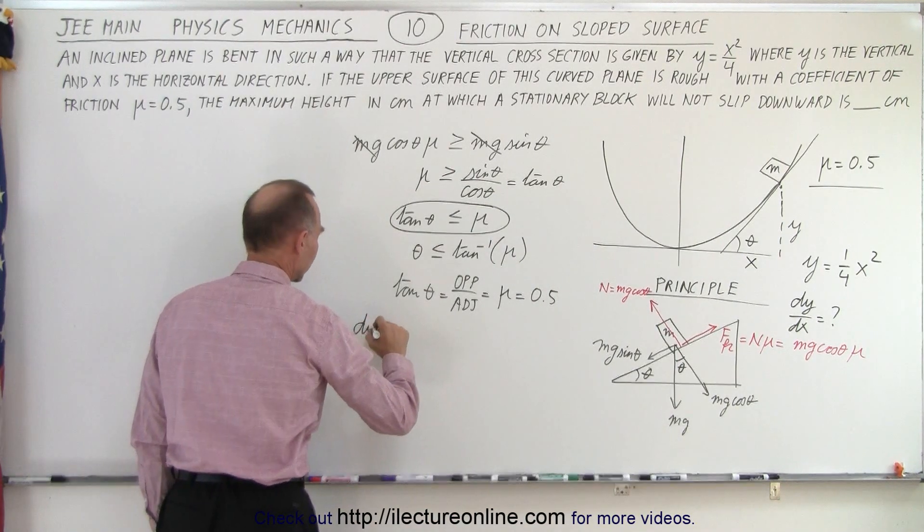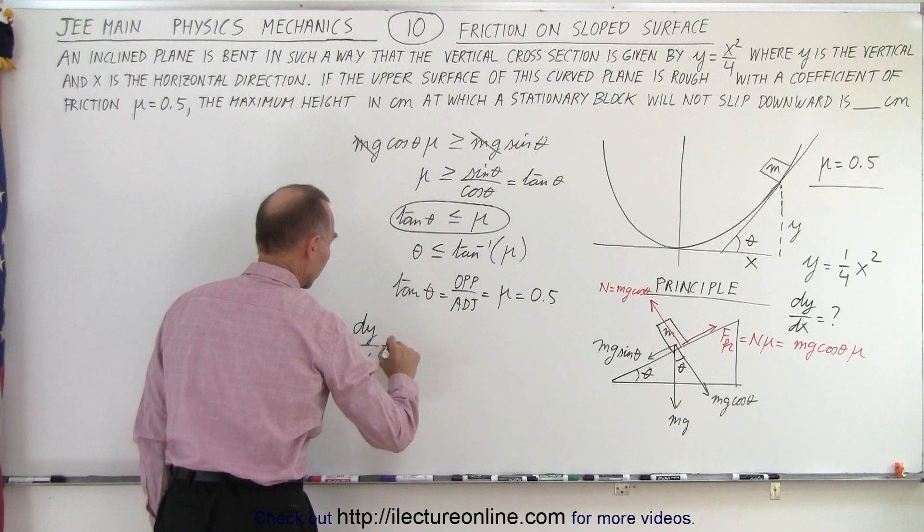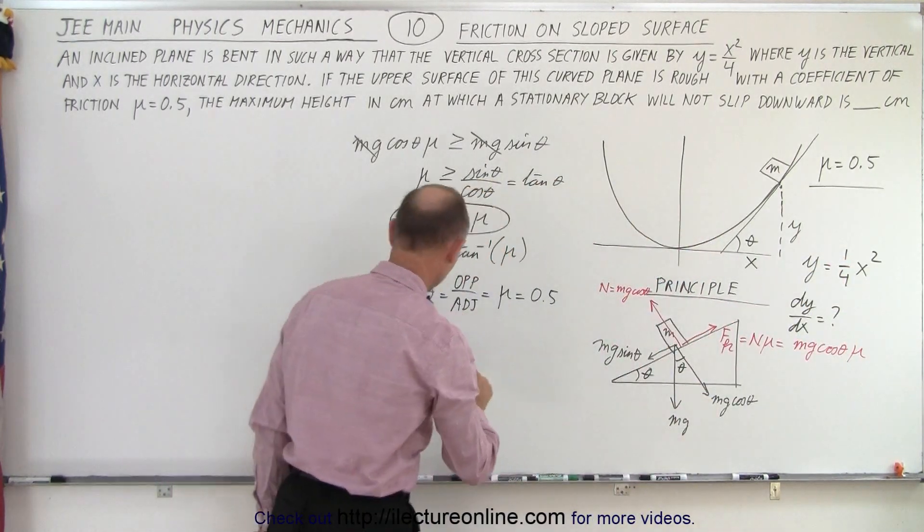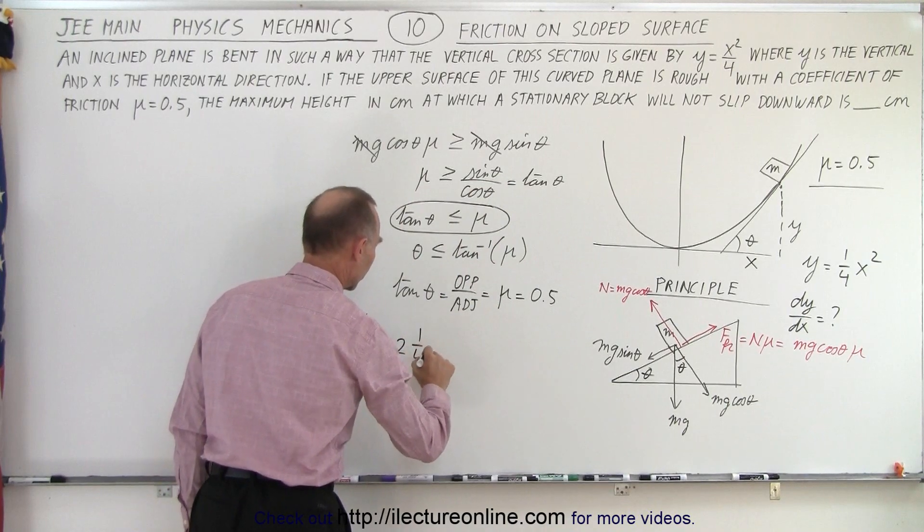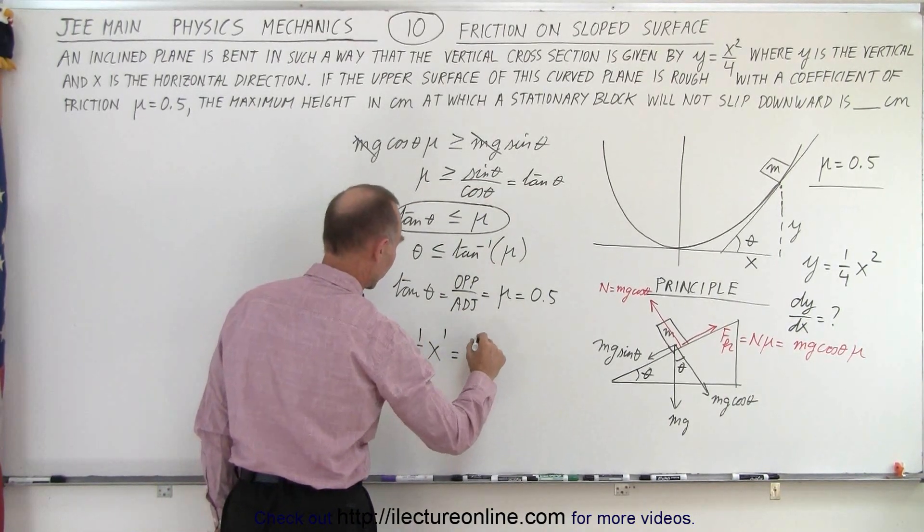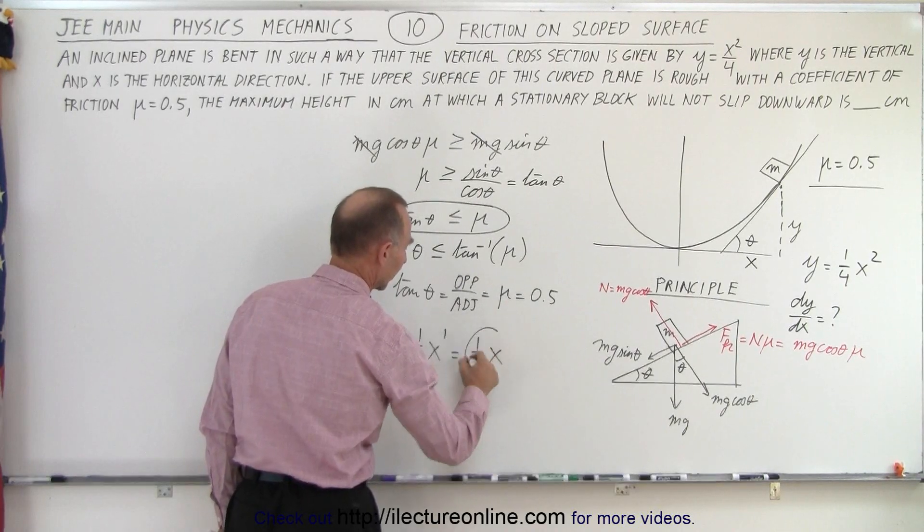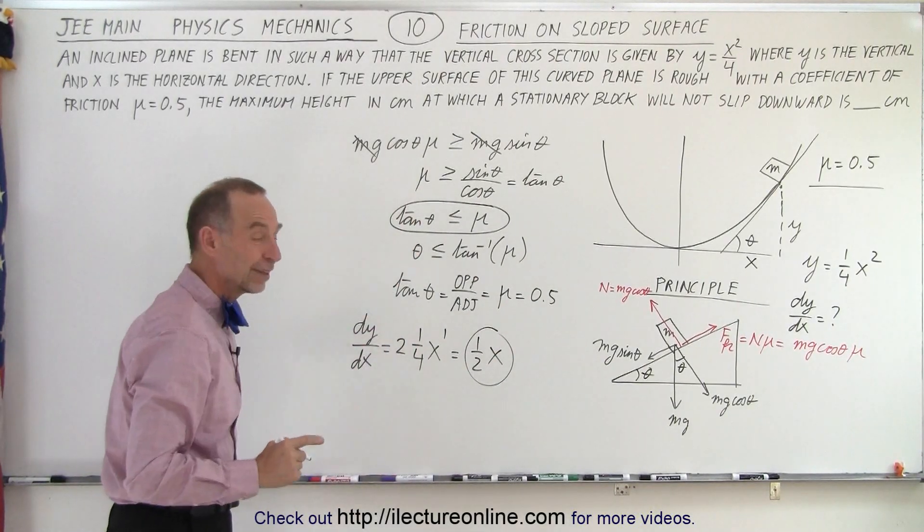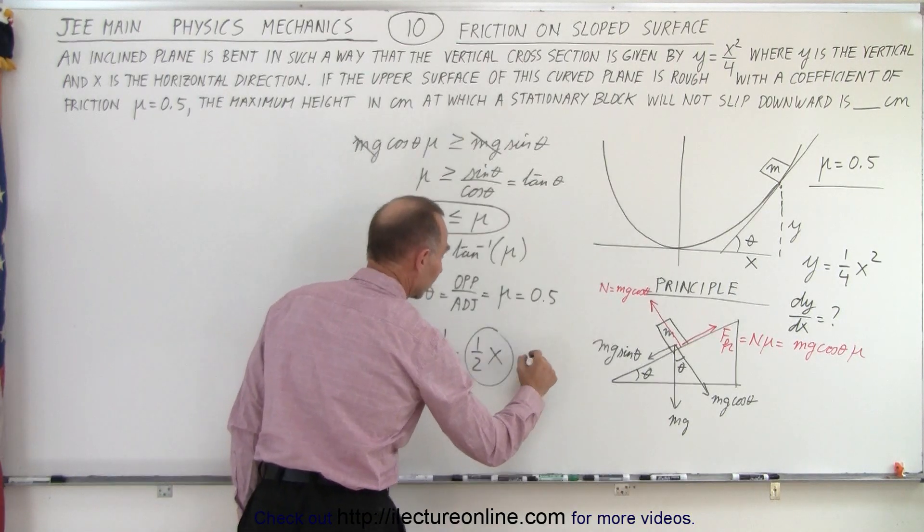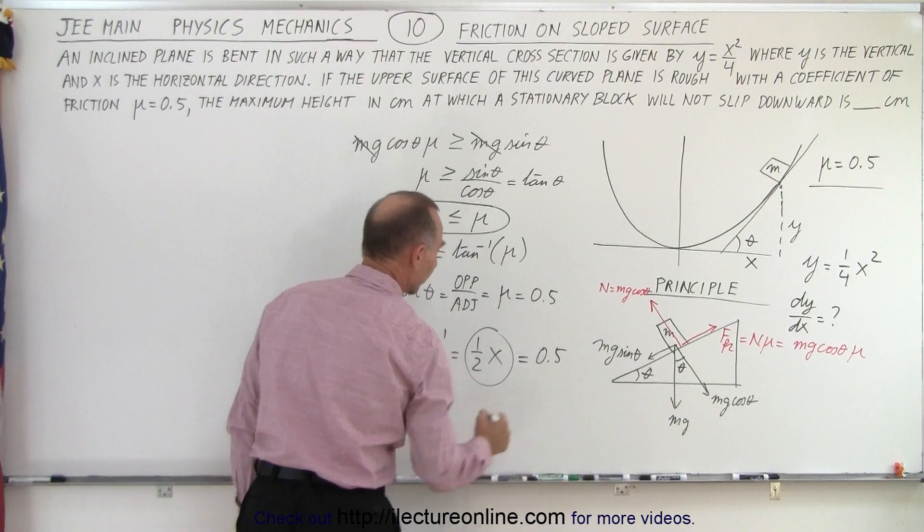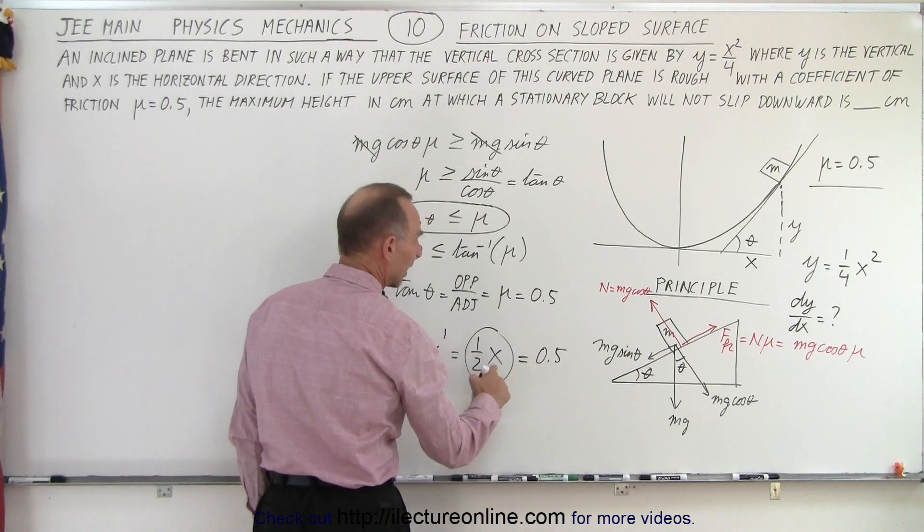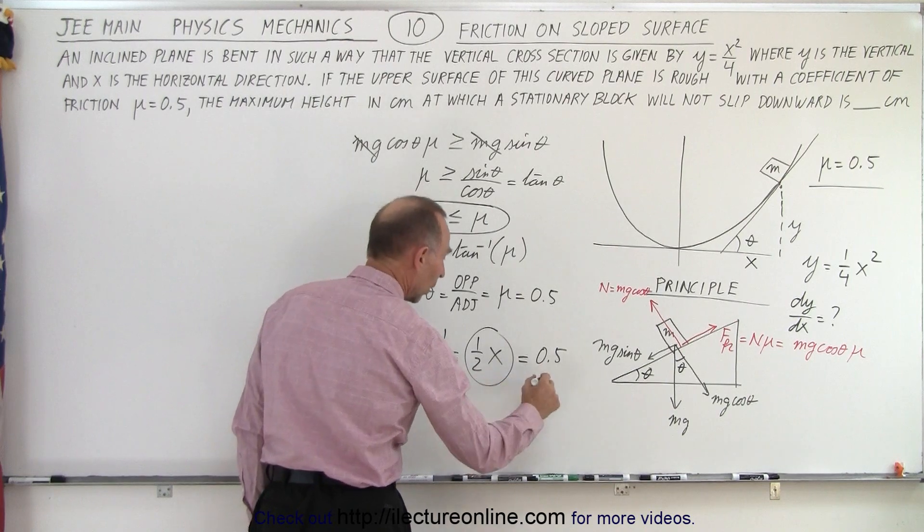So we can say that dy/dx is equal to the derivative of this, which would be two times one quarter, two times one quarter x to the two minus one, which is first power, which is essentially one half x. And so that will give us a value for x, because we know that this must be equal to 0.5. So if one half x equals 0.5, then x must equal one.